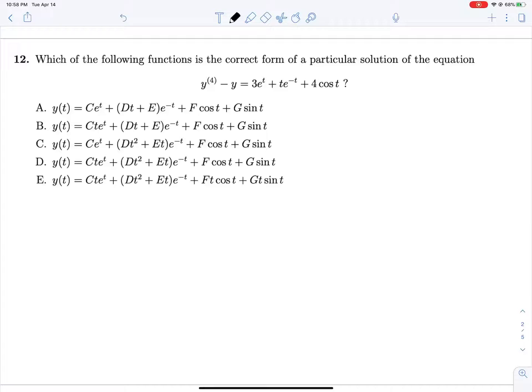And problem 12, which of the following functions is the correct form for a particular solution to this equation here? Solving our characteristic equation, we have R to the fourth minus 1 equals 0. R to the fourth equals 1. R equals plus or minus 1 and R equals plus or minus I. I does solve this, right? Let's check. Root negative 1 squared will be negative 1. And negative 1 squared, which is I to the fourth, gives us the 1 that we are looking for. Okay, so plus or minus 1 and plus or minus I.